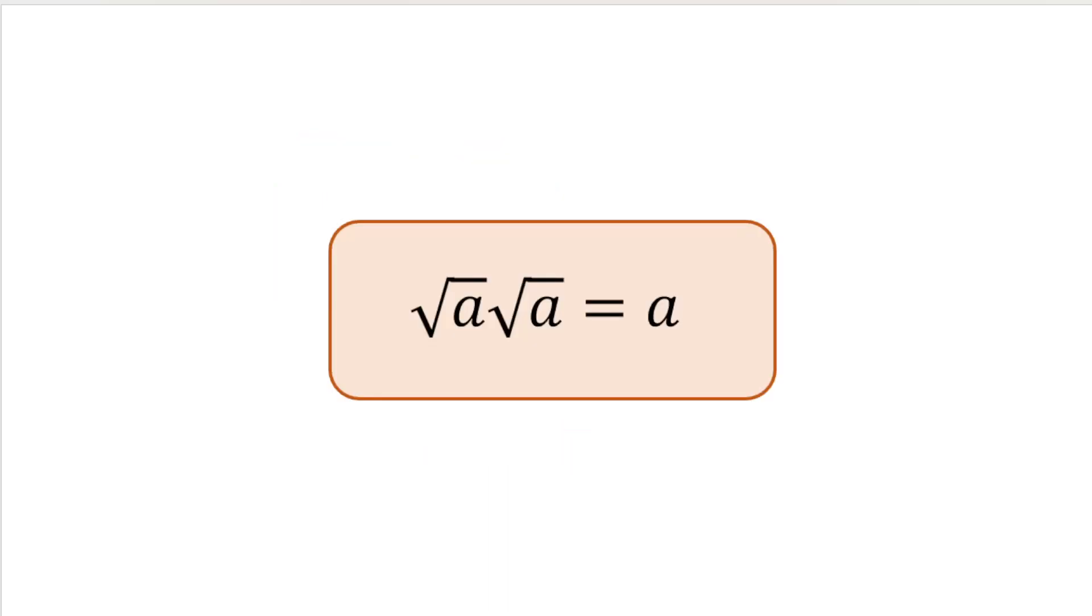Now, probably one other thing that would be quite helpful to know is root A times root A is just equal to A. We can see this if we do a couple of simple examples. For example, if we did root 3 times by root 3, that's equal to the square root of 9, and the square root of 9 is 3.